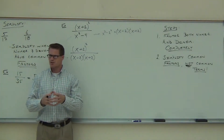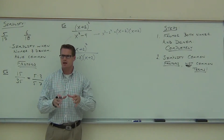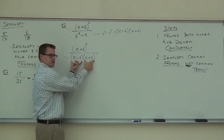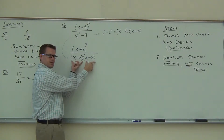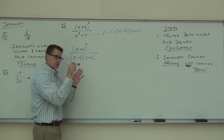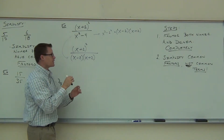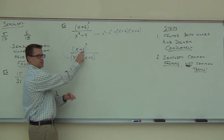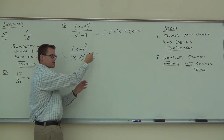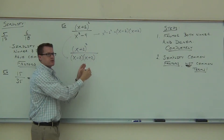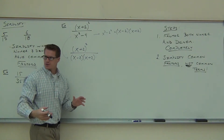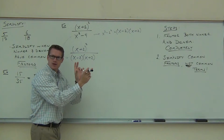Do you see any common factors up here? Things that are exactly the same on both the numerator and denominator that are factors. Factors are things that are multiplied together. These big pieces — notice how they're being multiplied? Those are factors. You can simplify all of a factor or nothing at all; you can't go through and simplify parts. What you can never ever do is simplify something that's connected by an addition or subtraction, because that is a term. So you couldn't cross out the twos — those are terms, not factors. Factors are big pieces that are multiplied together.